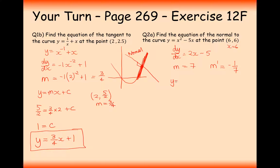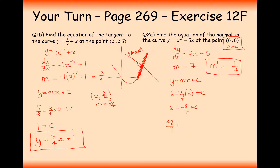Now we plug this value into y equals mx plus c, using this coordinate and this gradient because we're working out the normal. So 6 equals minus 1 over 7 times 6 plus c. This gives 6 equals minus 6 over 7 plus c, so c equals 42 over 7 plus 6 over 7 which is 48 over 7. Rewriting the final answer: y equals minus 1 over 7 x plus 48 over 7. That's the equation of this normal line.